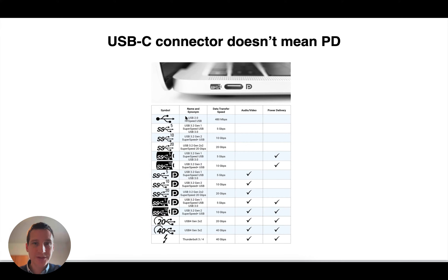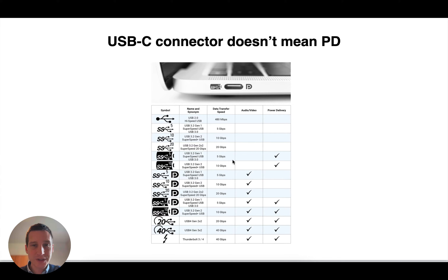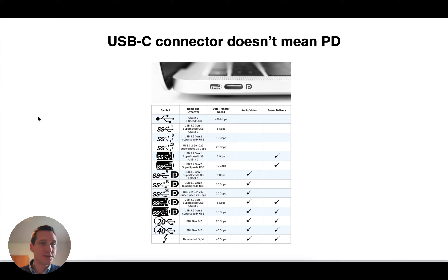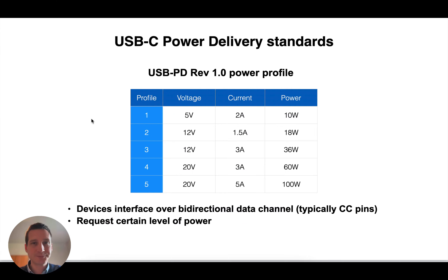An important thing to mention: a USB-C connector doesn't mean that you do have power delivery. That's an important one to watch out for. You also see there are different types and flavors of USB — 3.2 version, several generations — and it does not necessarily mean that power delivery is on board. So watch out for that. It might be indicated with symbols, or it's in your datasheet. But USB-C connector doesn't mean you have power delivery — important.